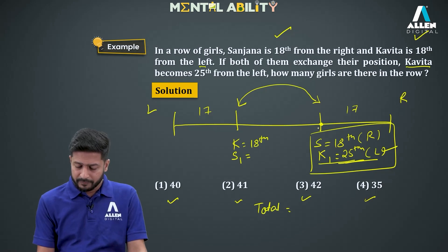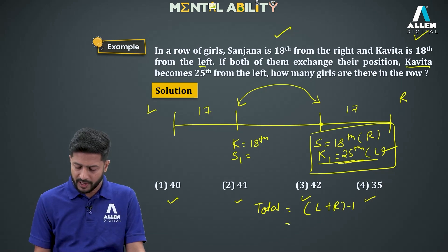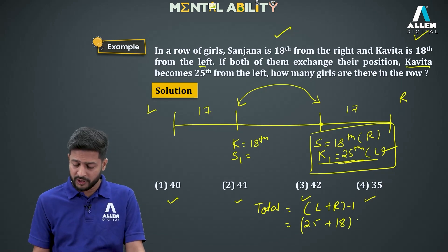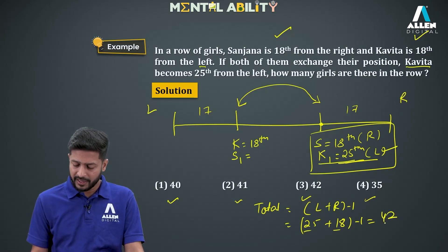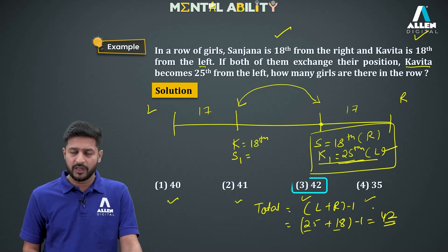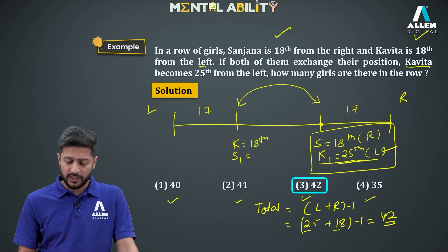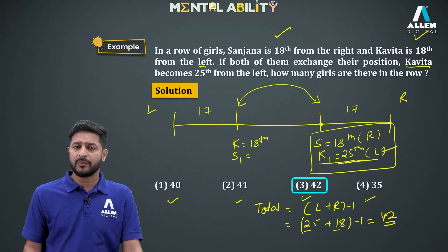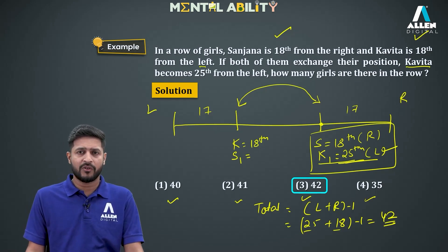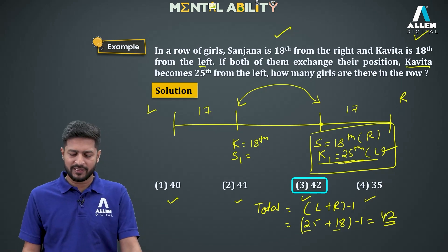Using Total = L + R − 1: rank from the left is 25, rank from the right is 18, subtract 1 — total = 25 + 18 − 1 = 42. The total number of girls in the row is 42, which is option 3. This was a slightly different question but we applied the same ranking concept.